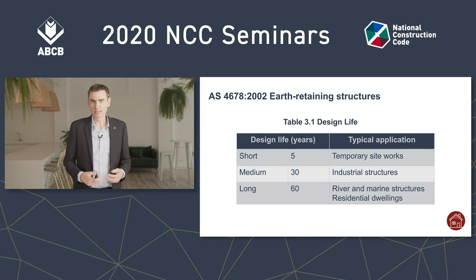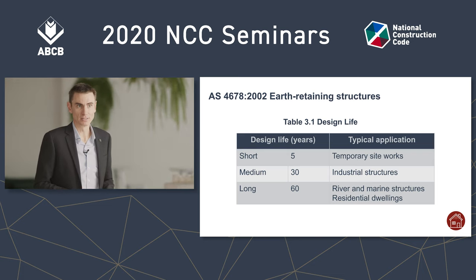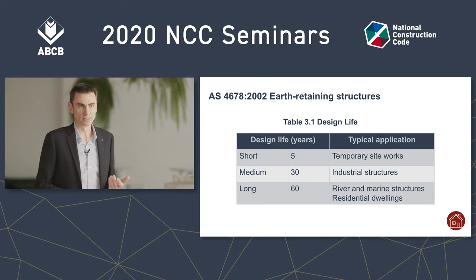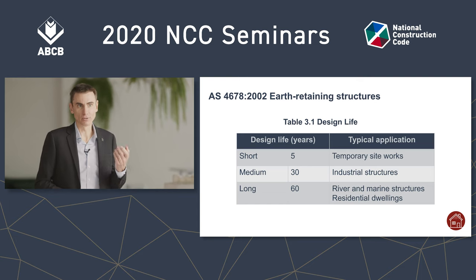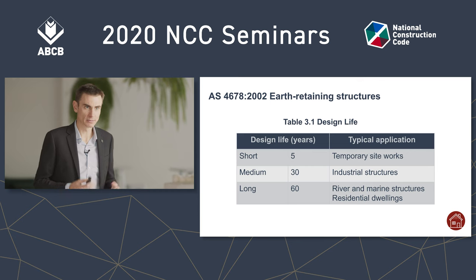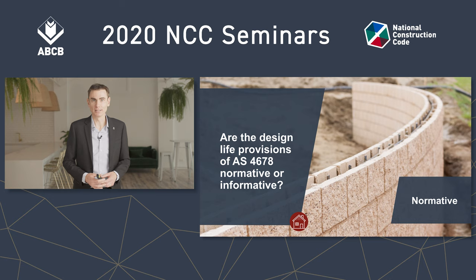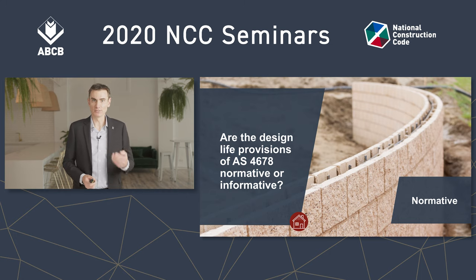The provision also refers to table 3.1 where typical design life requirements are set out, and here are some of the items from that table. Table 3.1 isn't exhaustive and doesn't cover every scenario, but it does have an item for residential dwellings — meaning a retaining wall directly related to the house — and for that scenario a design life of at least 60 years applies. A retaining wall in landscaping, like one in a front yard, is a different matter. It isn't directly related to the house, so that scenario is not listed in table 3.1. Clause 3.4.1 still requires that you consider the design life of that retaining wall, even though it's not in table 3.1 — you'll have to use a different means of determining an appropriate design life. So the design life requirements of AS4678 are normative, they must be followed, and in some circumstances table 3.1 will place a design life of 60 years on that retaining wall.